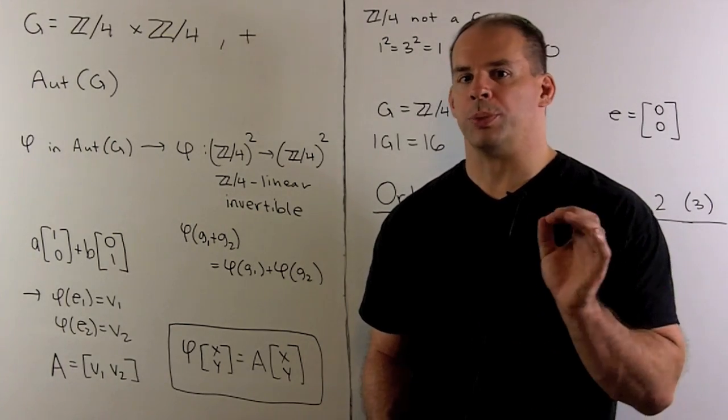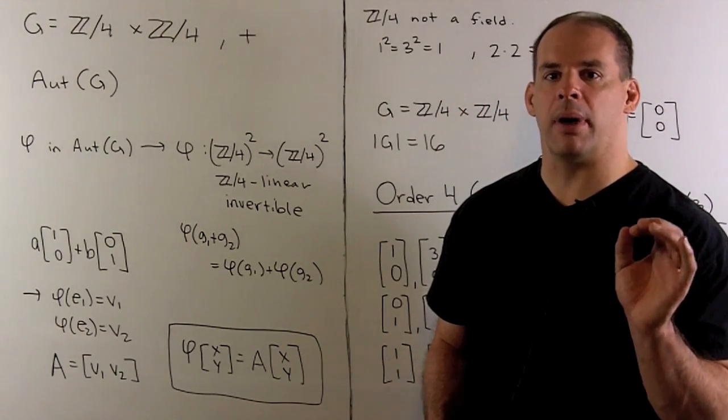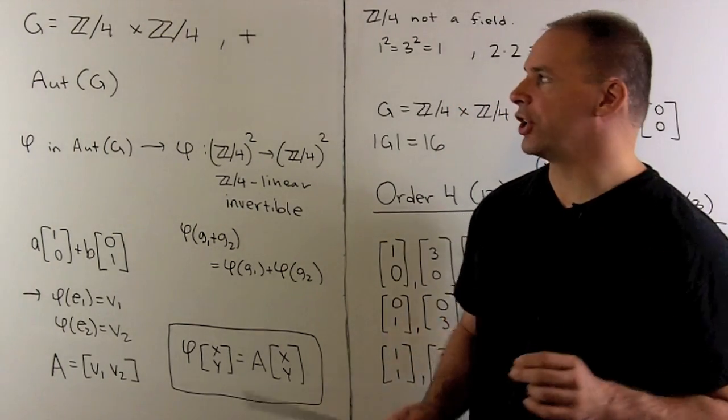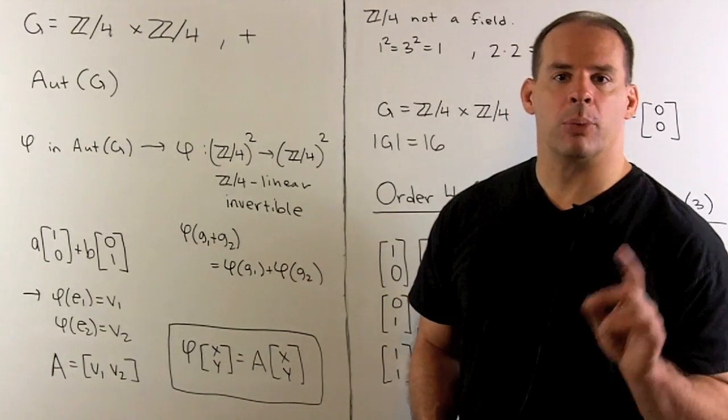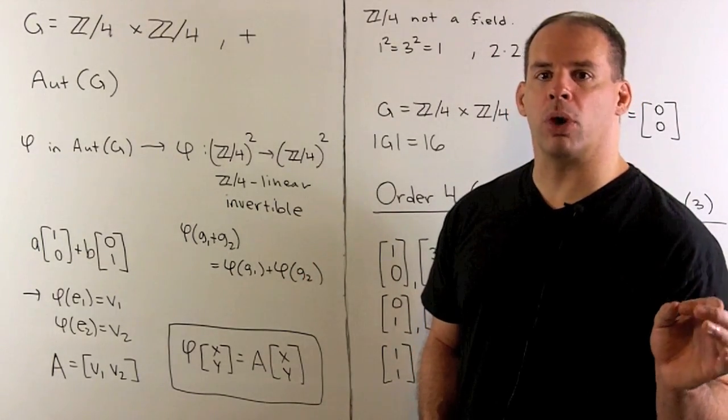For this part, our group G is going to be the product of Z mod 4 with itself, under addition. The problem is, we want to find the automorphism group of G.